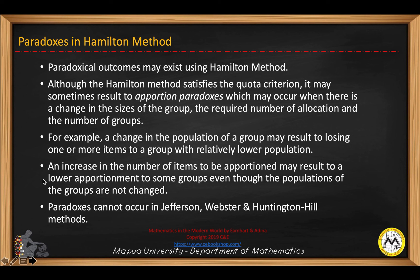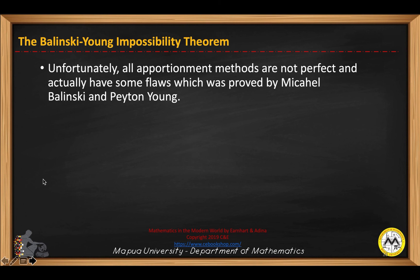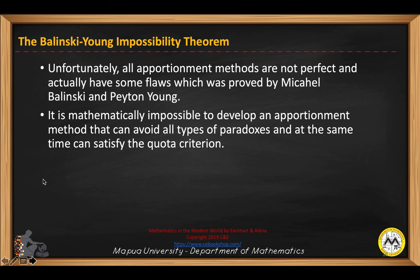Paradoxes cannot occur in the Jefferson, Webster, and Huntington-Hill methods. Unfortunately, all apportionment methods are not perfect and actually have some flaws, which was proved by Michael Balinski and Peyton Young. According to them, it is mathematically impossible to develop an apportionment method that can avoid all types of paradoxes while also satisfying the quota criterion.